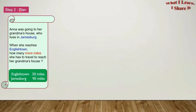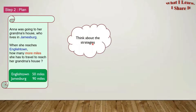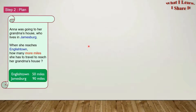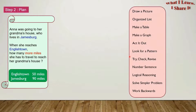Step 2: Plan. Now think about the strategies. Here are all the strategies we've discussed before — I have made separate videos for each of them: draw a picture, organized list, make a table, make a graph, act it out, look for a pattern, try-check-revise, number sentence, logical reasoning, solve a simpler problem, and work backwards.